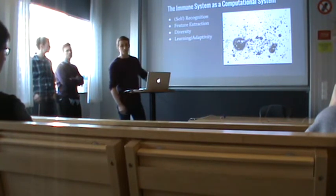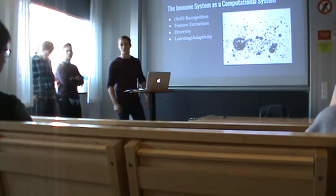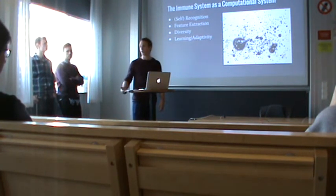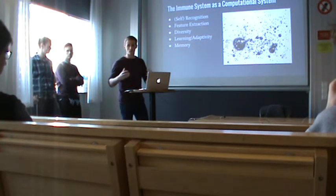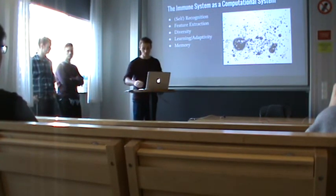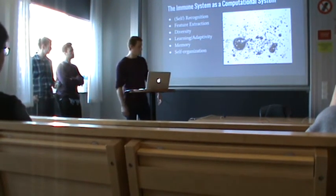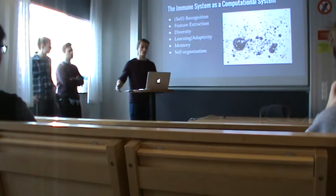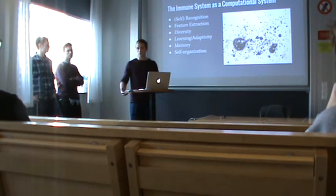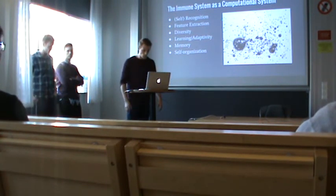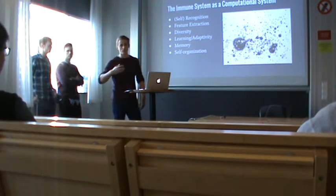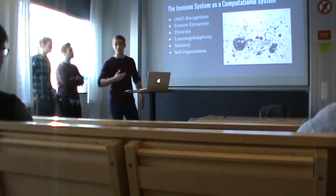Fourth, learning and adaptivity: as explained, the immune system is able to learn from past encounters and quickly adapt. Fifth, the immune system is able to store a huge amount of information in a very robust and distributed fashion. Last but not least, it does all of this through self-organization — there is no central control. All these complex tasks are achieved only by local interactions of relatively simple agents.